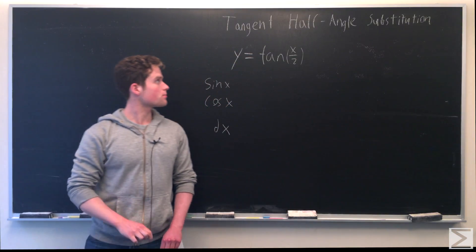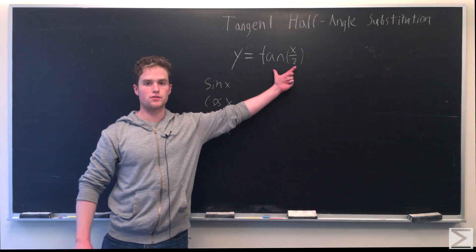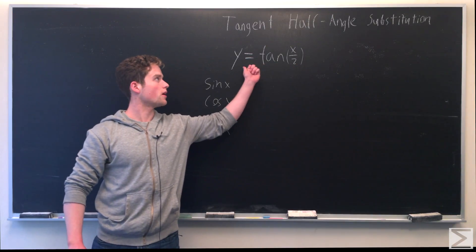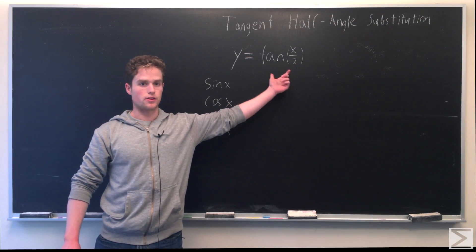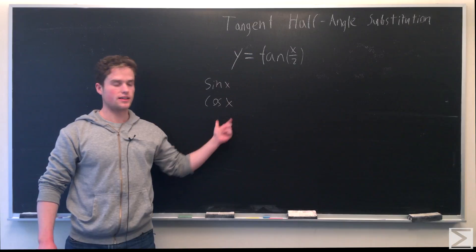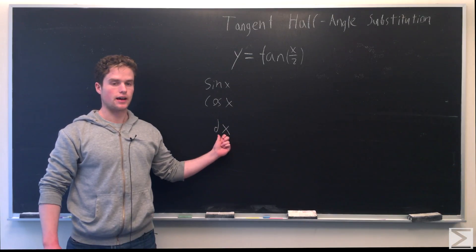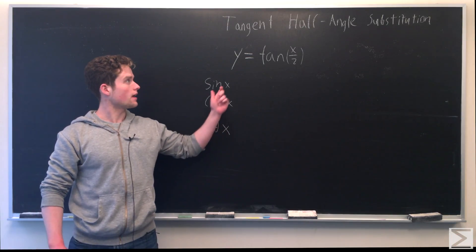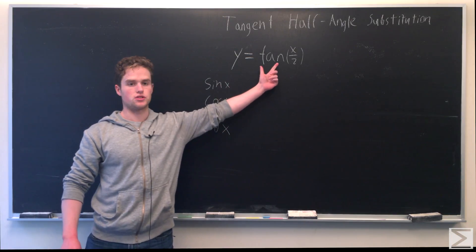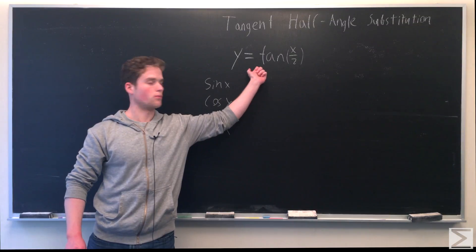We're going to let y equal tangent of x over 2, and we're going to see how we can write sine x, cosine x, and dx as a function of just tangent x over 2, or y.